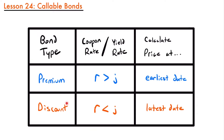If the bond is going to be sold at a discount — meaning the coupon rate is less than the yield rate and the price is less than the face value — then you would want to calculate its price at the latest possible date, the last moment in time within the callable range. This table is really all you need to know about callable bonds.